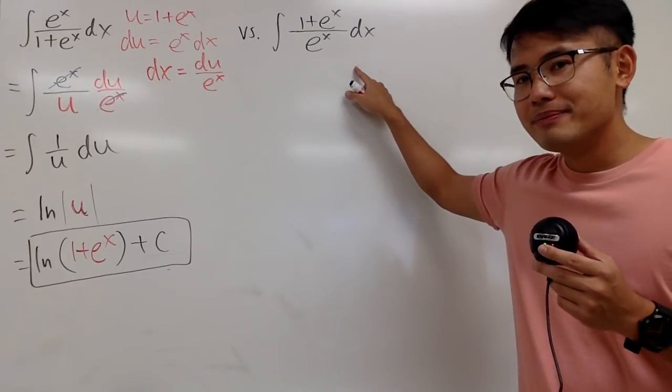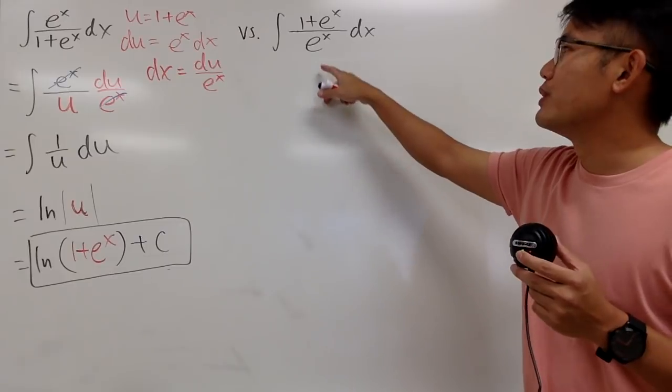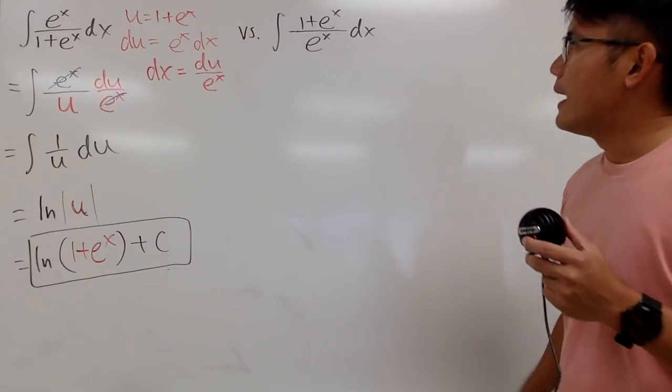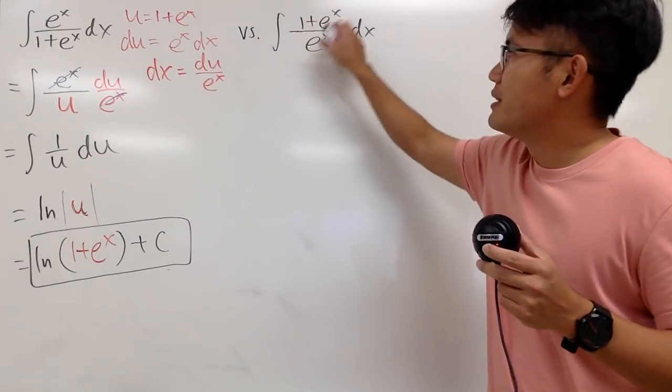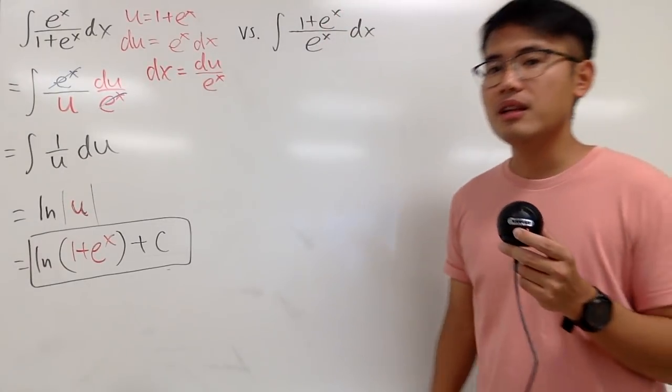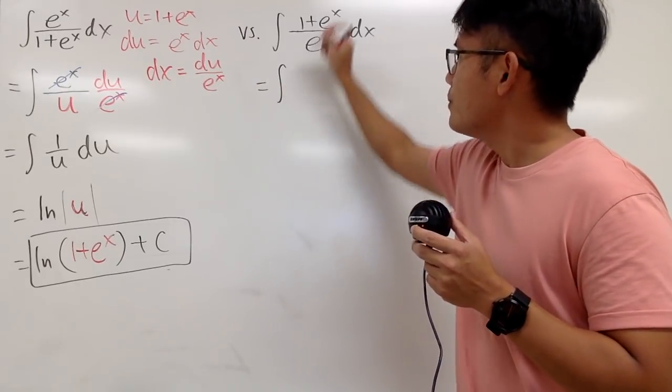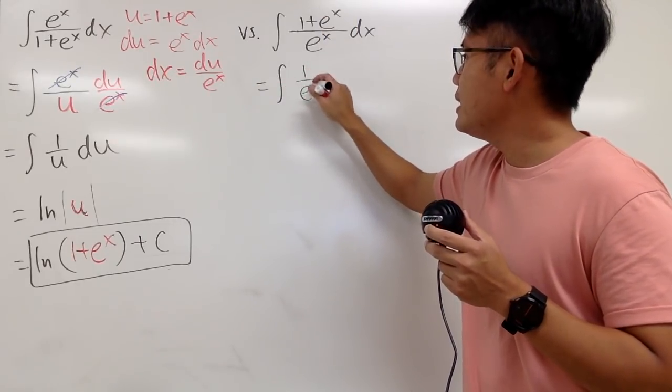Okay, for the second one, I'm not going to do the u substitution, letting u equal to e^x on the denominator. I am going to just split the fraction, because I only have one thing in the denominator, right?